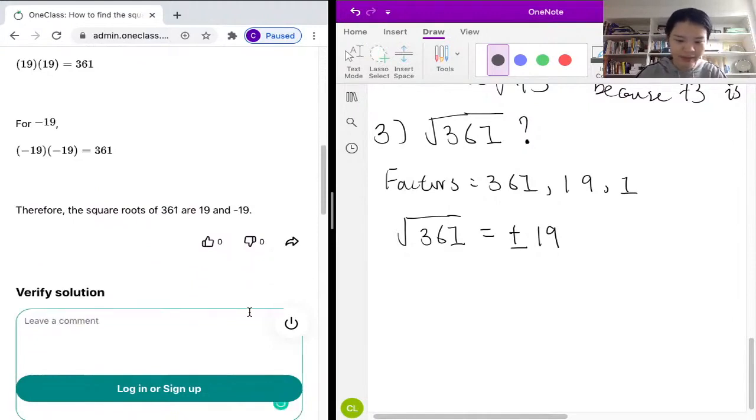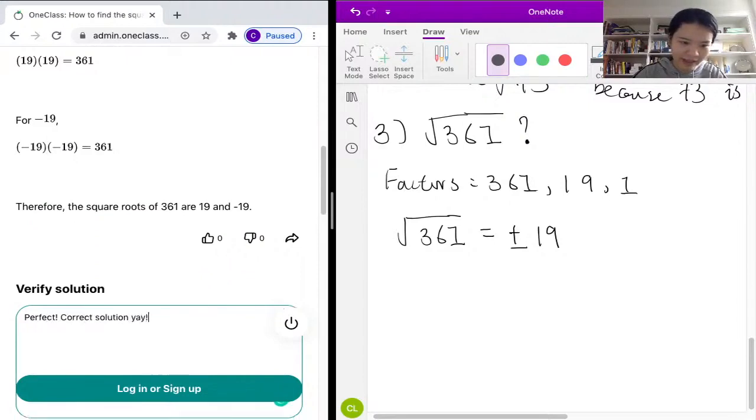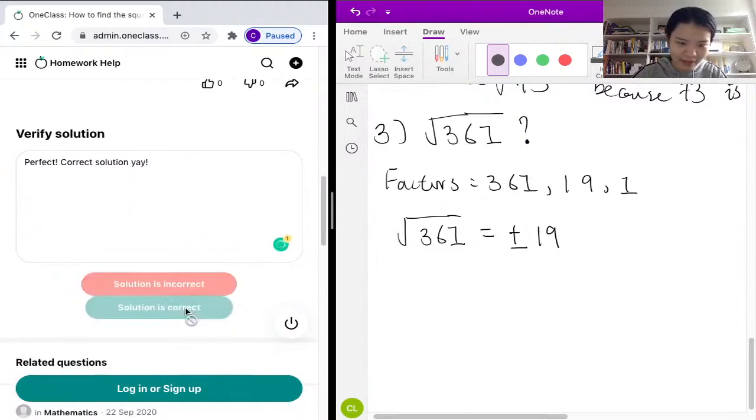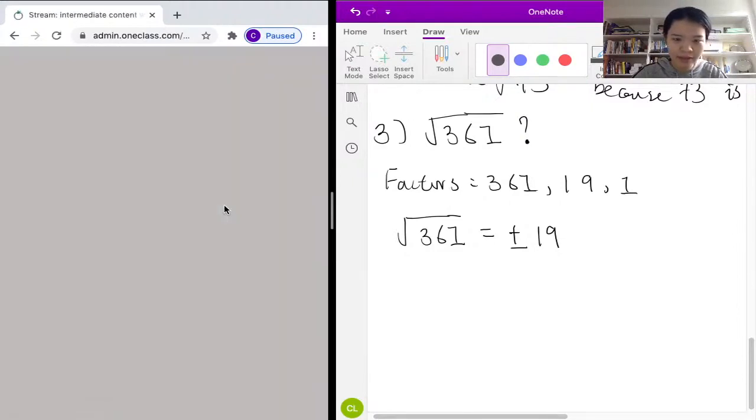So we should say perfect, correct solution. The solution is correct. So this is our third problem. Now let's look at our fourth problem.